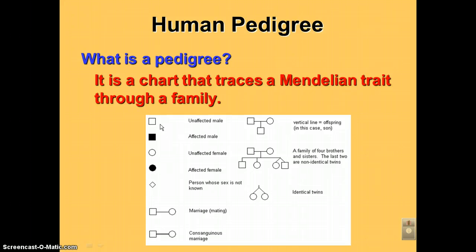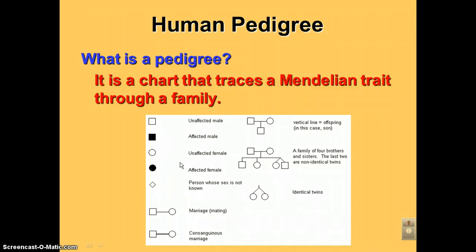But you've got to understand what the symbols are. Squares are males, and if you show the trait, then you are colored in. Round is females, and if you show the trait, you're colored in. I kind of remember this this way, is that guys are blockheads, and girls have a round figure.